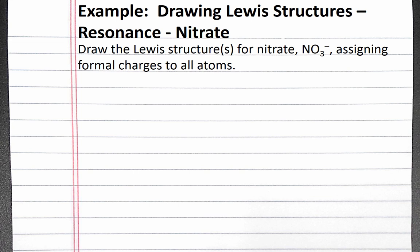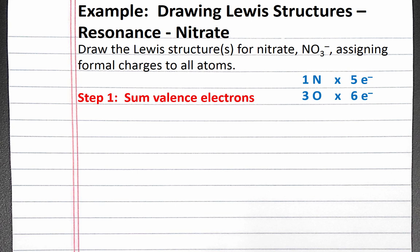In this example, we draw the Lewis structures for nitrate, assigning formal charges to all atoms. Our first step is to sum the valence electrons. Nitrate has one nitrogen atom with five valence electrons and three oxygen atoms with six valence electrons each. The charge of nitrate is one minus, so there is one additional electron. Adding these together, we have 24 valence electrons.